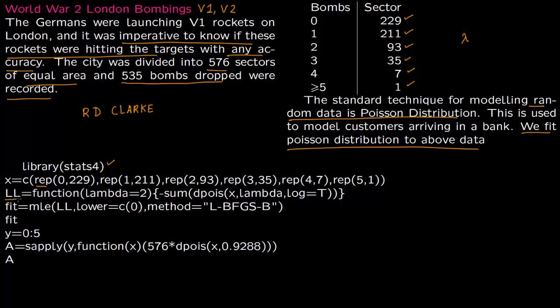We first construct a log likelihood function. You give some initial value lambda equals 2, then minus sum. We are fitting a Poisson distribution, this is your sample, lambda is what you want to find out, log is true. We're using this command MLE, giving a lower bound, and there is a specific method.